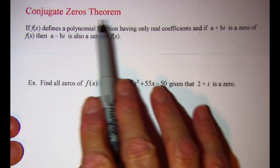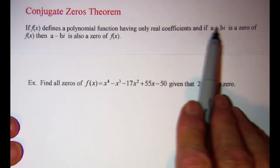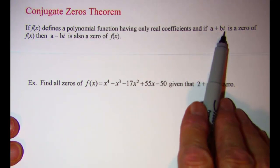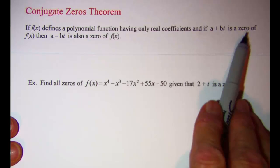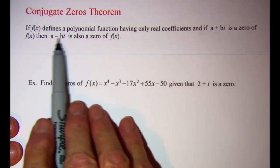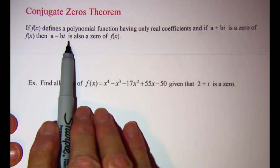Recall that the conjugate zeros theorem says that if a plus bi is a zero of our function, then a minus bi is also a zero.